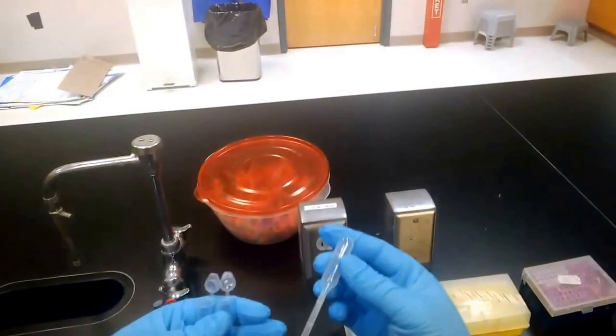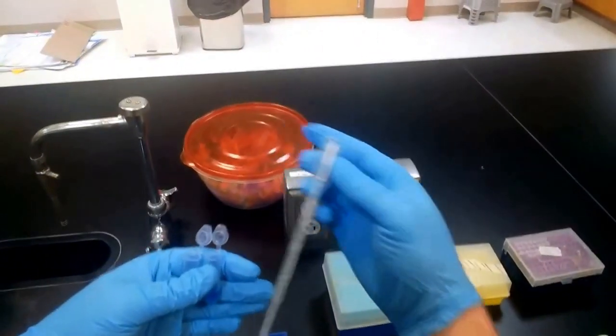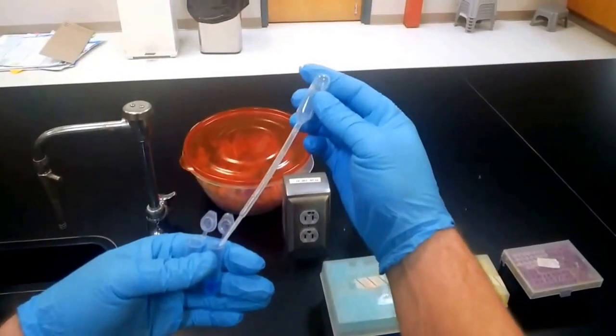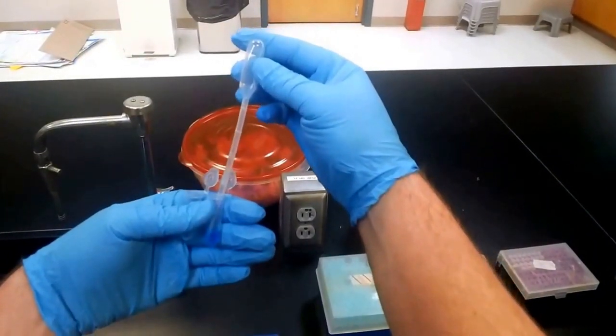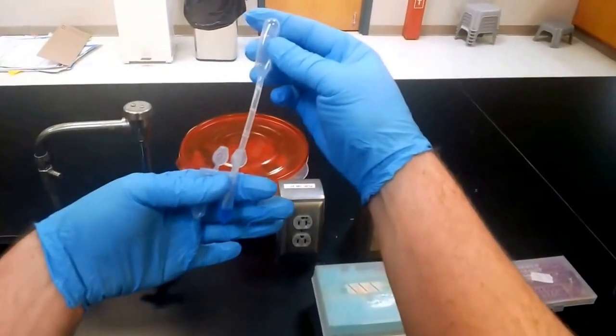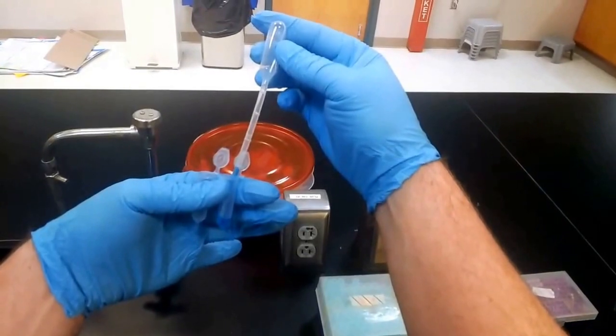So let's try to transfer, let's say, 250 microliters with the Pasteur pipette. That's certainly possible. We squeeze in the bulb of the Pasteur pipette, dip it into our solution, and then pull up slowly until we get to 250 microliters.